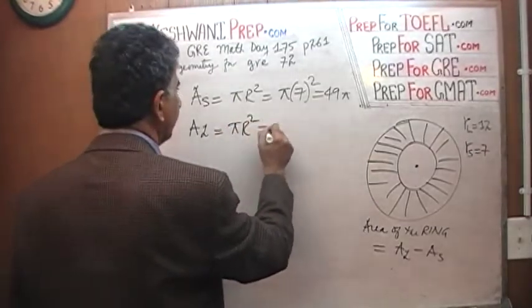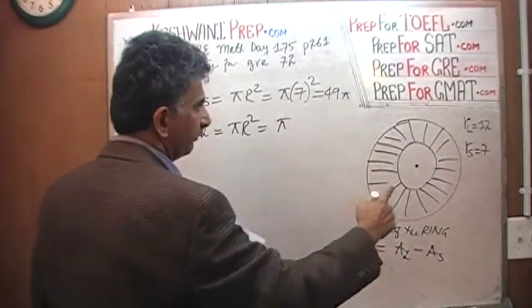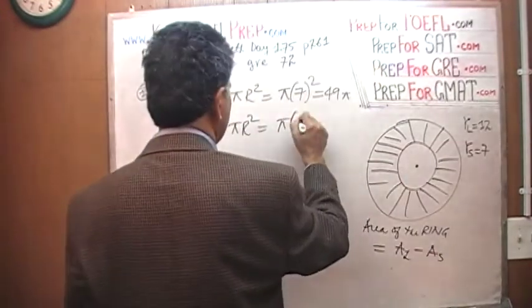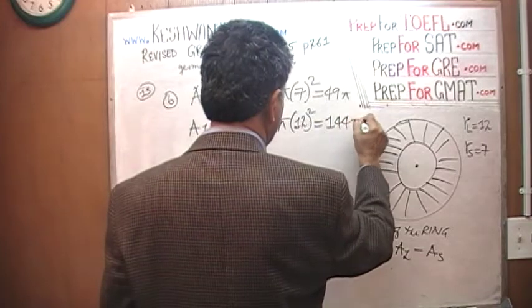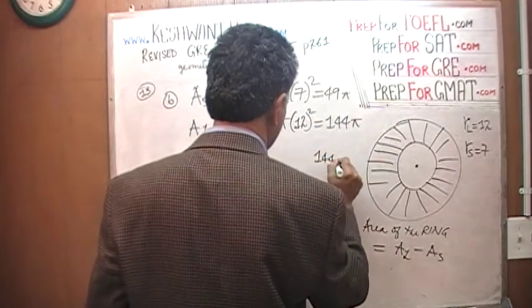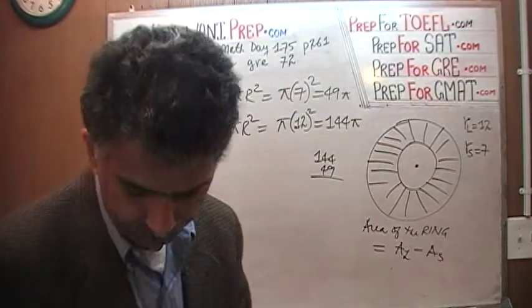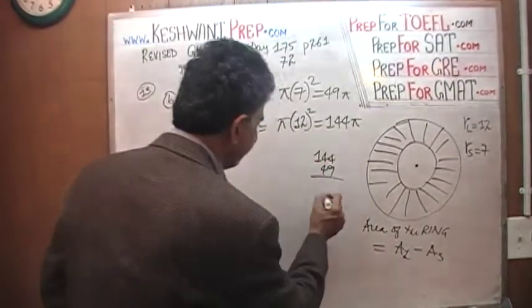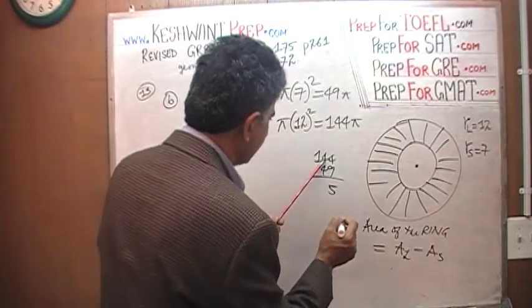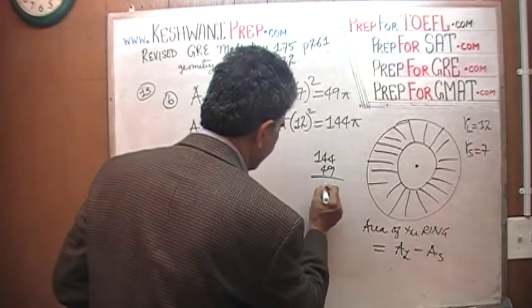So why don't we do it? It is equal to πR² and the radius of the large circle is 12. 12 squared is 144π. 144 minus 49, 14 minus 9 is 5 and this will become 13 minus 4 is 9. There we go.